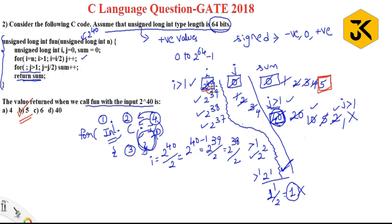So the output returned is 5, making B the correct answer. Most people get confused by performing the division incorrectly. You need to make the exact calculation — it's actually a simple one. I hope you understood. Thank you.